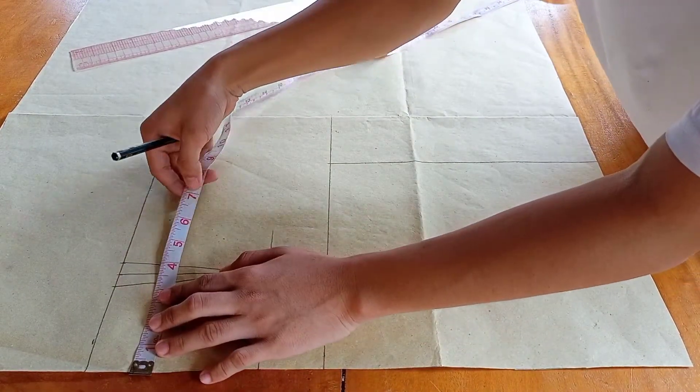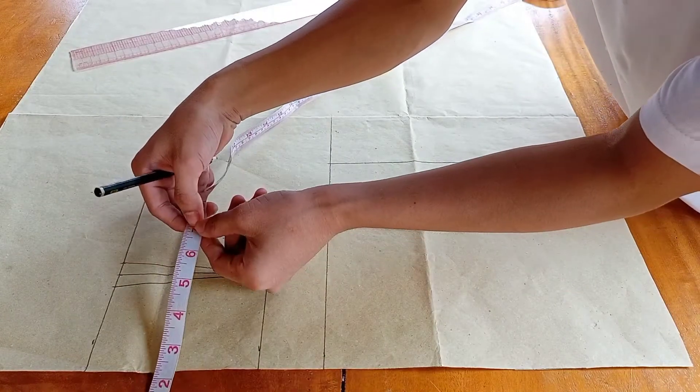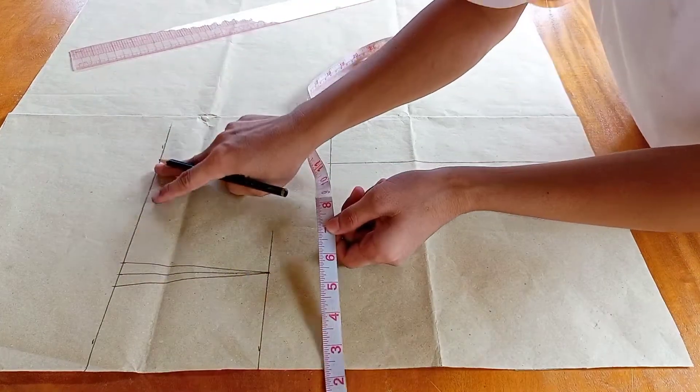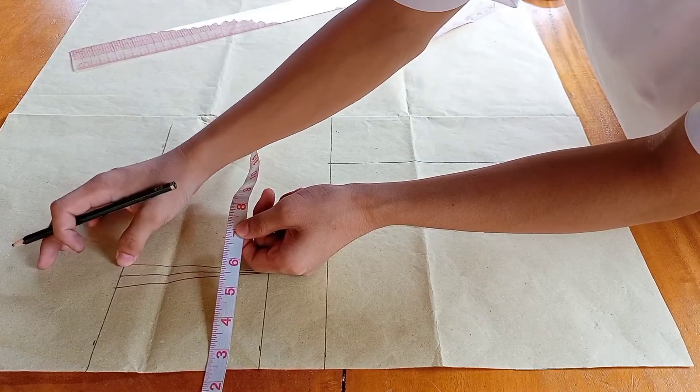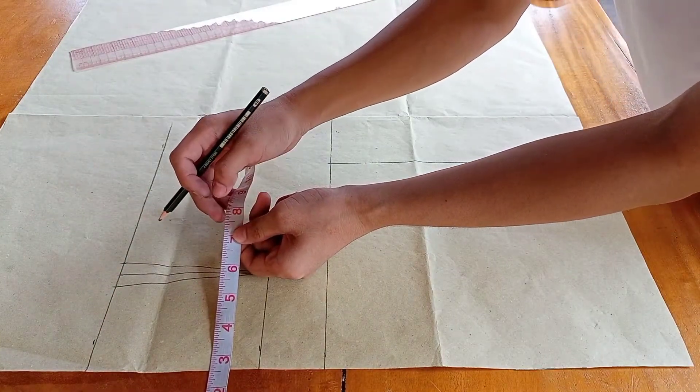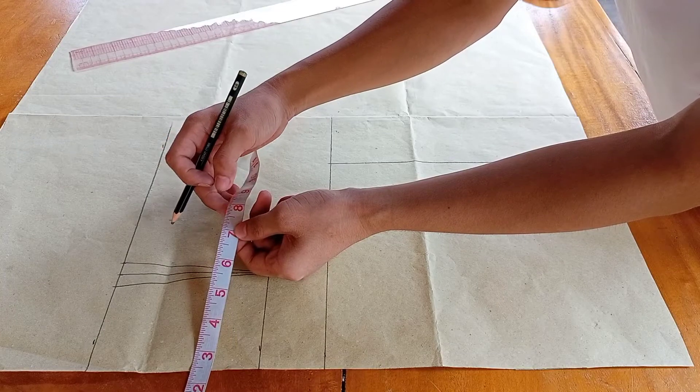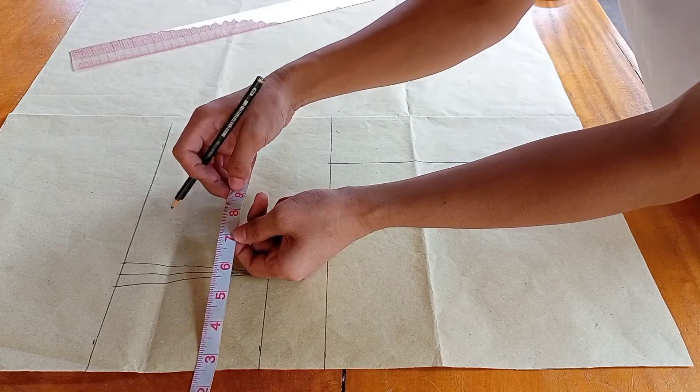Remember, 7 inches plus the 1 inch dart intake. We need 2 more darts, so 1 inch plus 1 inch equals 2 inches. So 7 inches plus 2 inches is 9 inches.